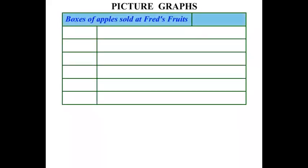In this lesson we're doing some work on picture graphs. In this graph we have boxes of apples sold at Fred's Fruits. We have one little thing here — one apple is equal to 20 boxes. This is known as a key.